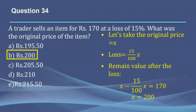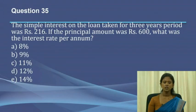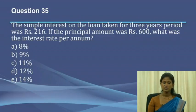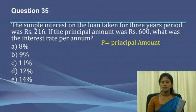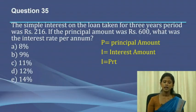The answer is 200, which is option B. Next, we move on to question number 35. The simple interest on a loan taken for a 3-year period was 216 rupees. If the principal amount was 600 rupees, what was the interest rate per annum? This is a question connected with simple interest, and they are asking us to find the interest rate per annum.